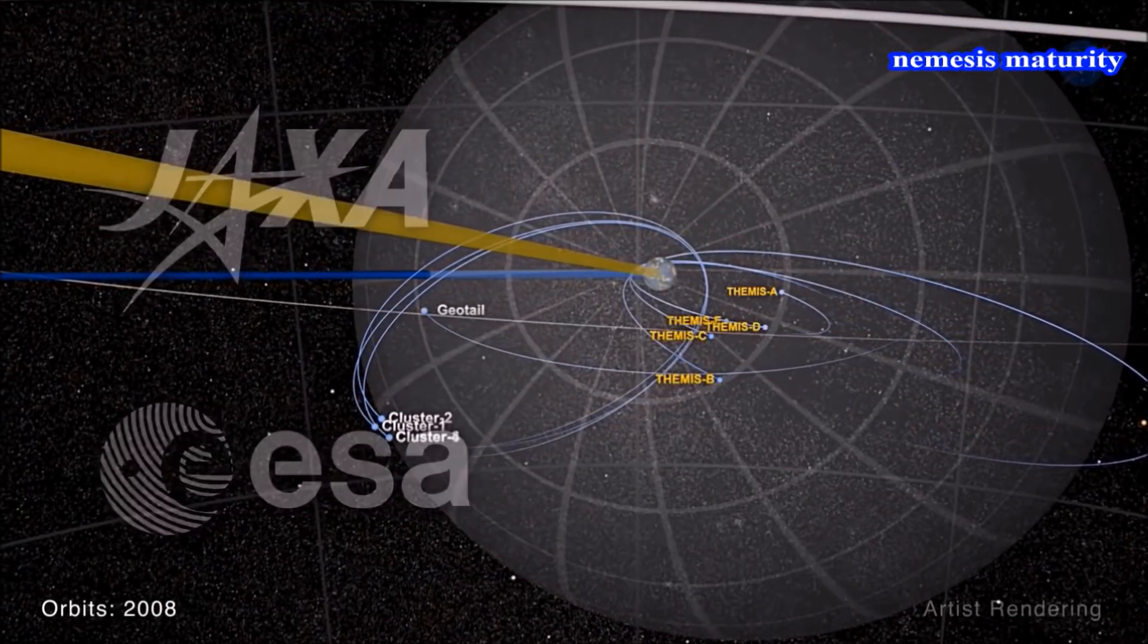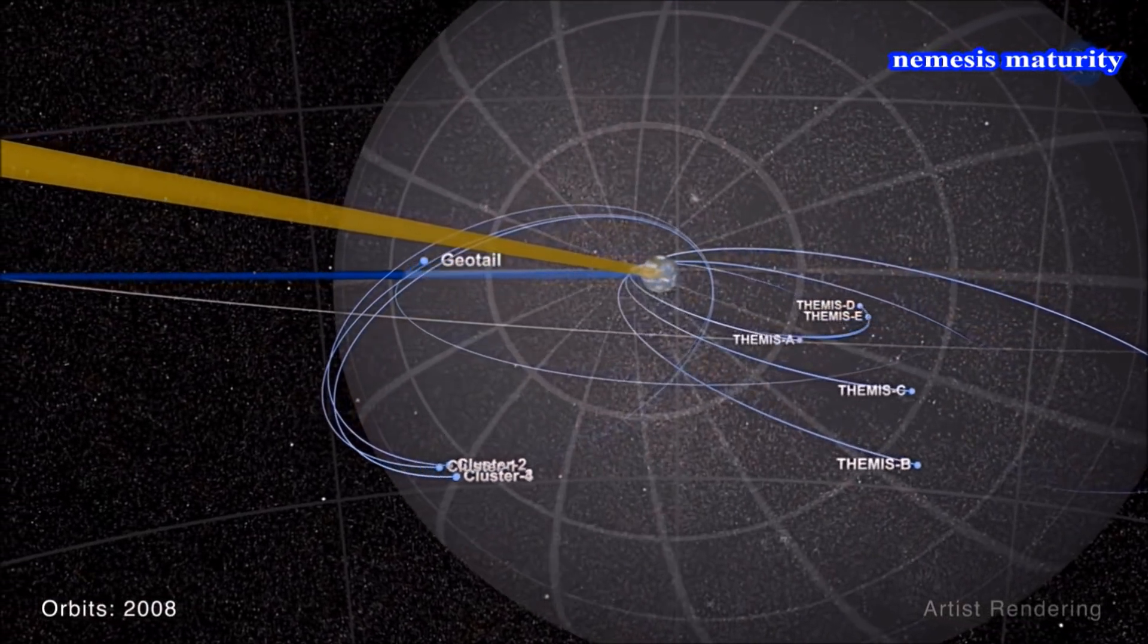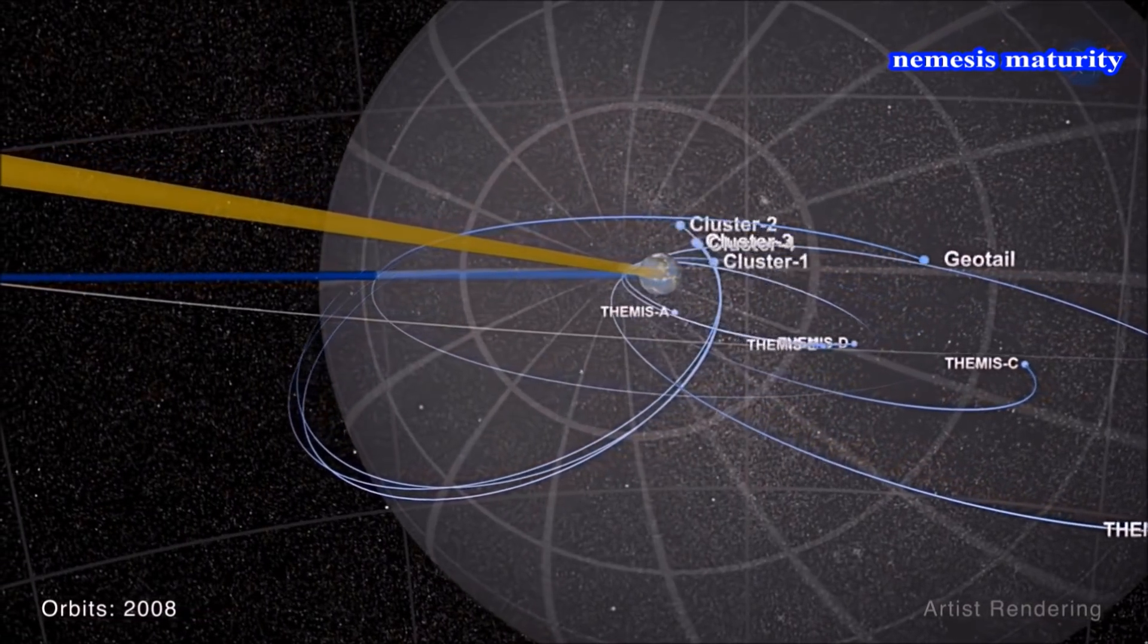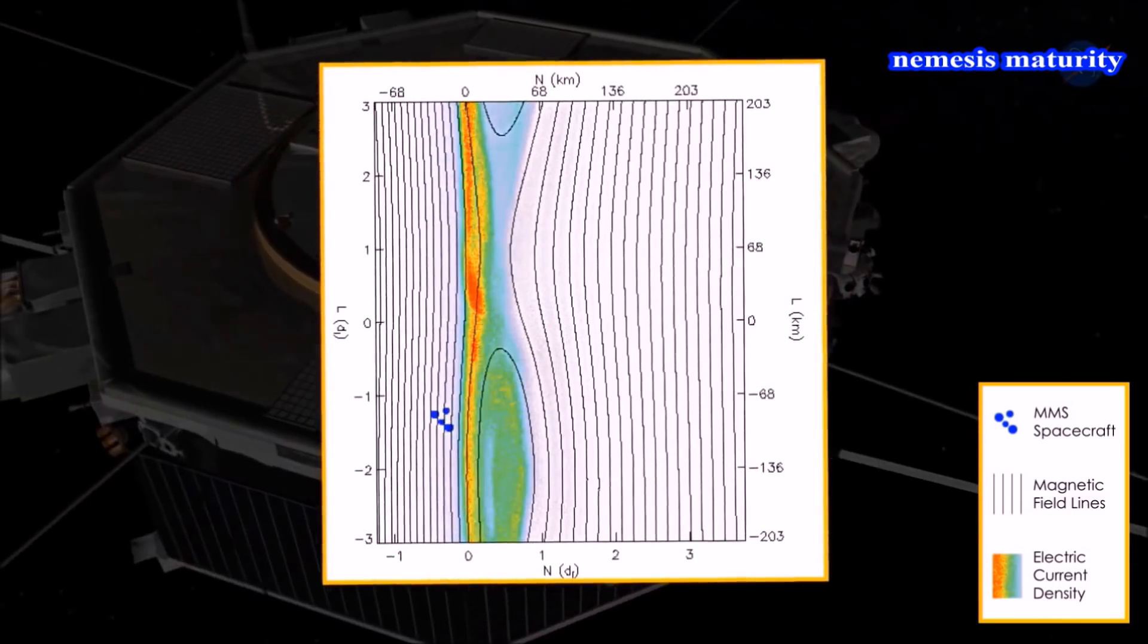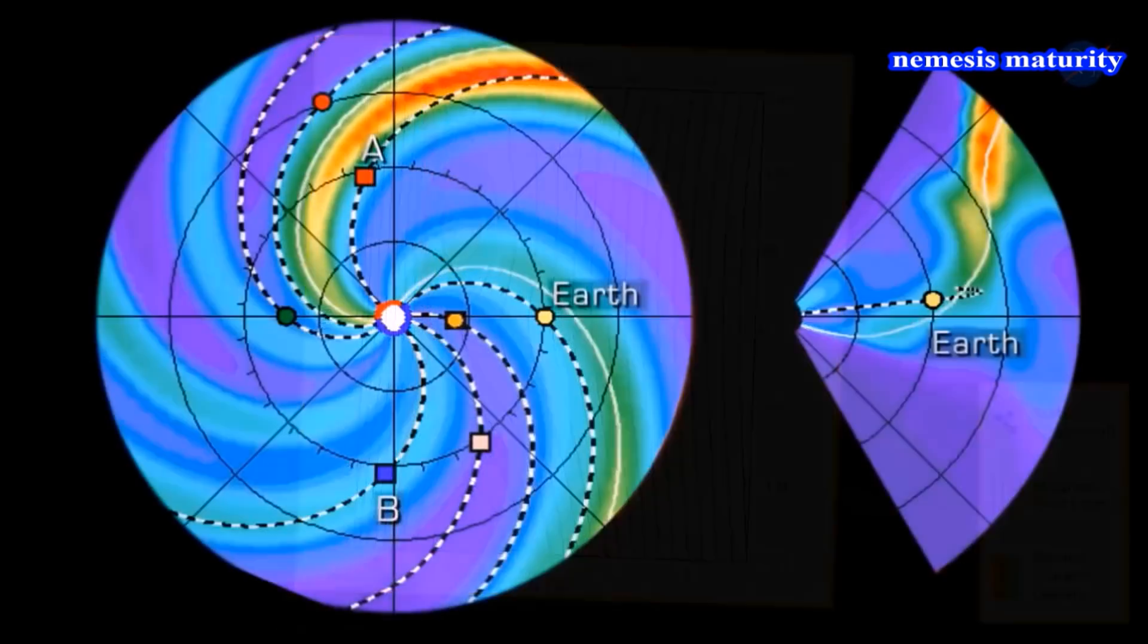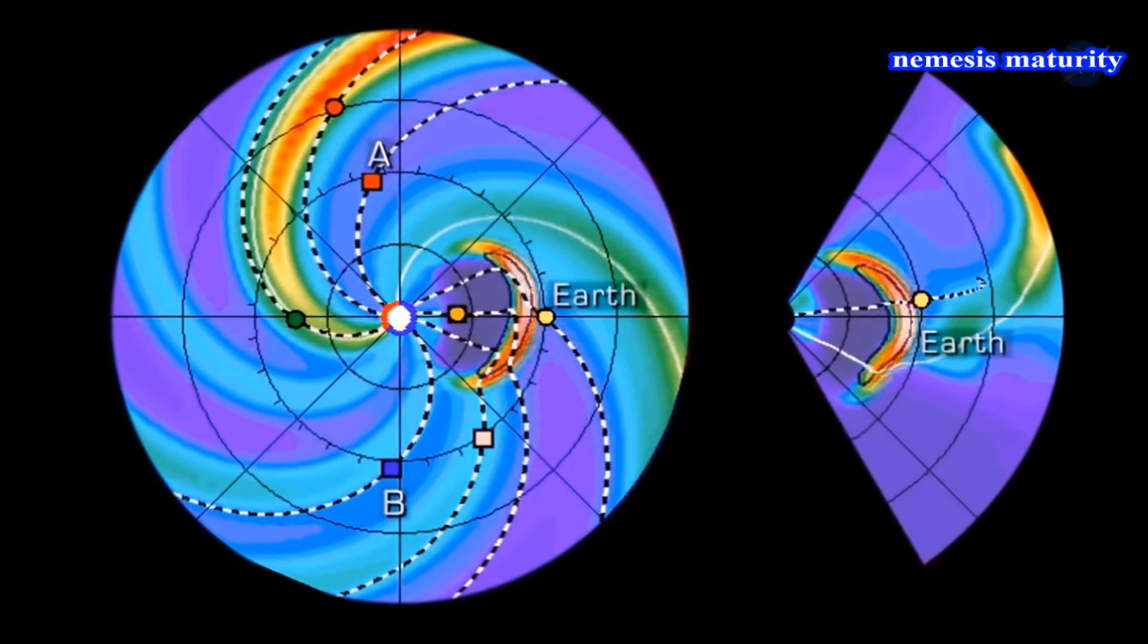MMS complements missions from NASA and partner agencies such as Themis, Cluster, and Geotail, contributing critical new details to the ongoing study of Earth's magnetosphere. Together, data from these investigations not only help unravel the fundamental physics of space, but also help improve space weather forecasting.